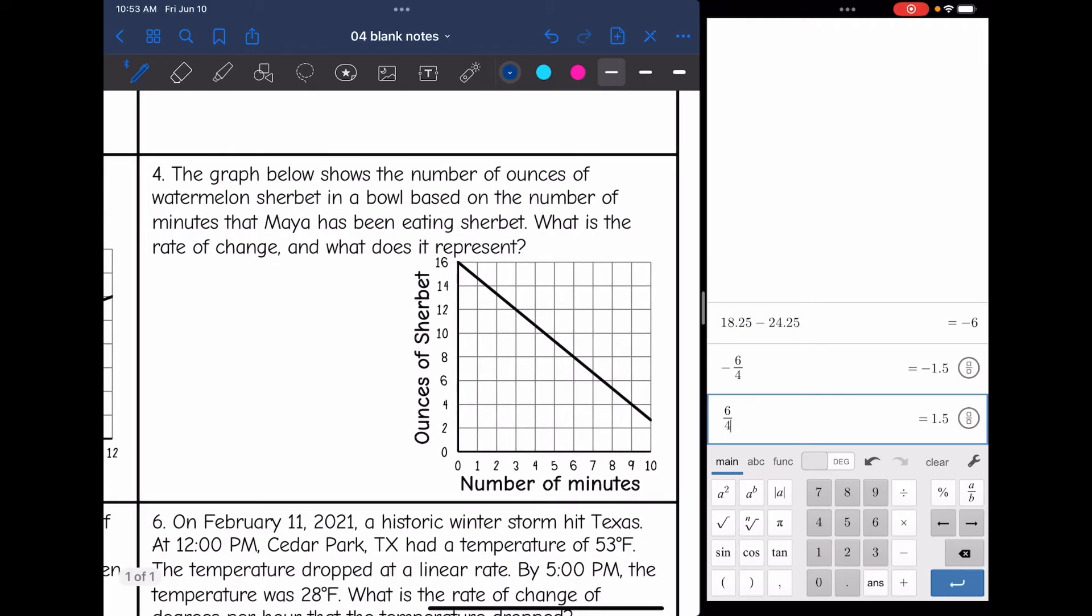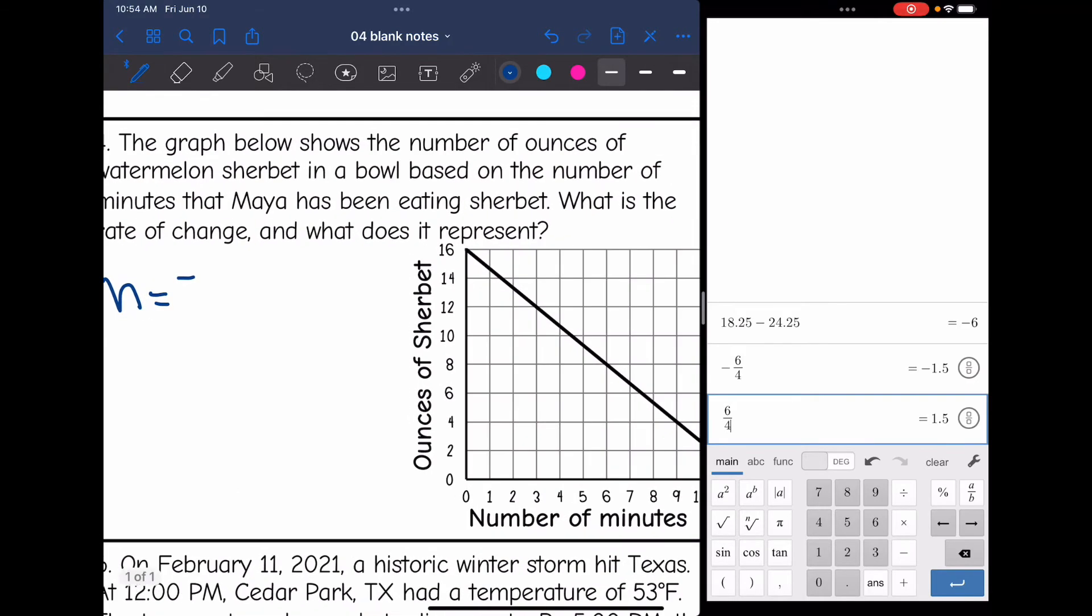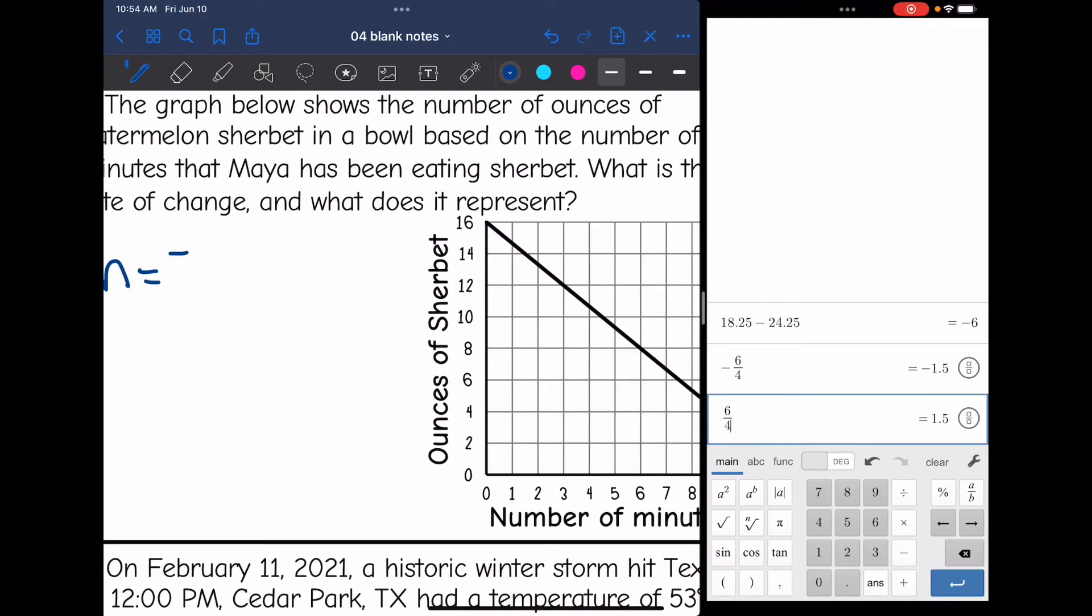Let's look at number four. It says, the graph below shows the number of ounces of watermelon sherbet in a bowl based on the number of minutes that Maya has been eating sherbet. What is the rate of change and what does it represent? So again, we're finding the rate of change. So that means we're finding the slope. First thing I notice is this line is negative, which makes sense because she's eating the ice cream or the sherbet. So there's going to be less and less of it.